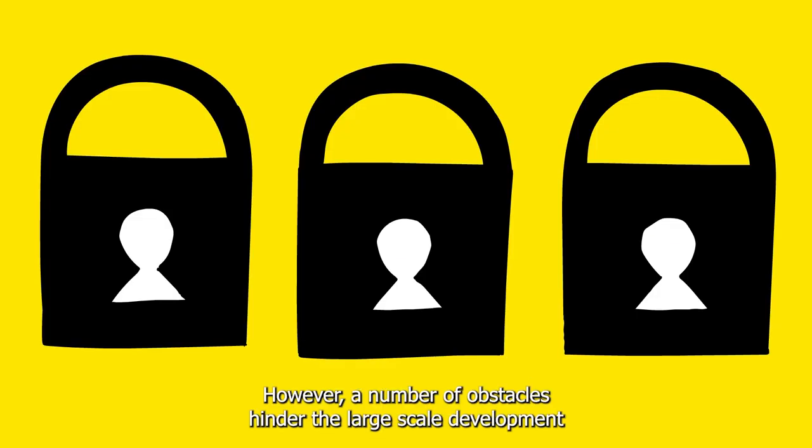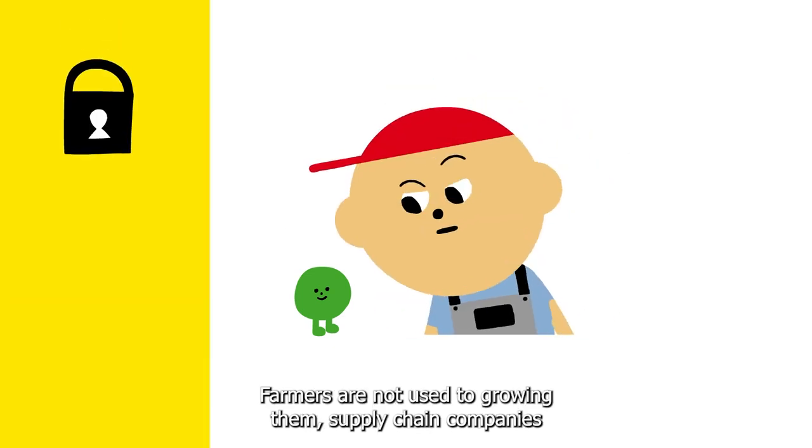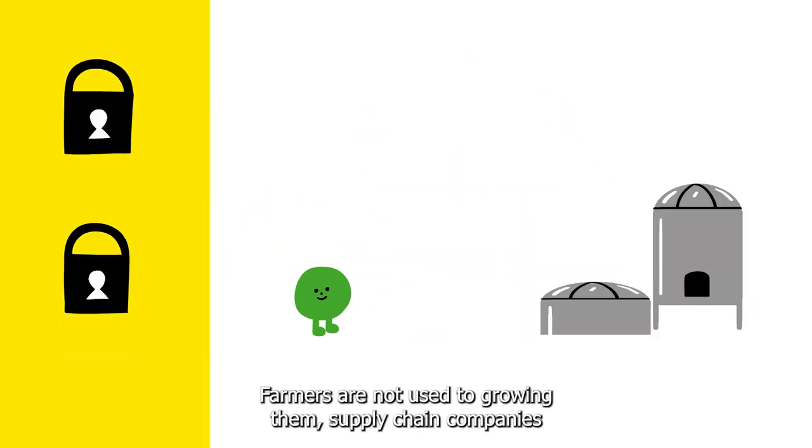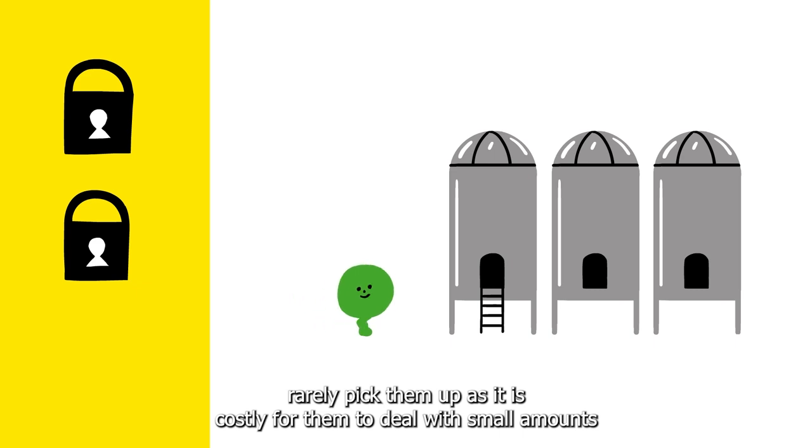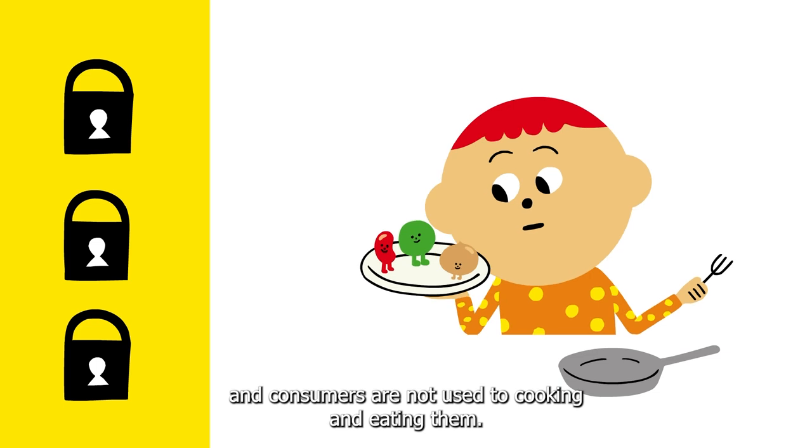However, a number of obstacles hinder the large-scale development of these minor crops. Farmers are not used to growing them. Supply chain companies rarely pick them up as it is costly for them to deal with small amounts. And consumers are not used to cooking and eating them.